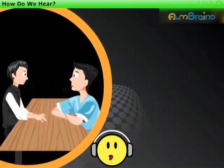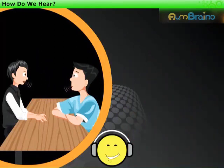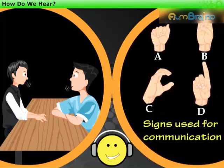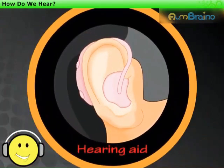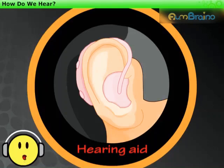Speech is developed as a direct result of hearing. Therefore, a child with hearing loss may have defective speech also. So by learning sign language, a person with hearing disability can communicate effectively. Technological devices also help hearing impaired persons to improve their quality of life.